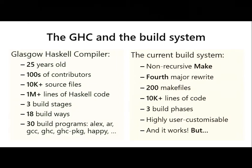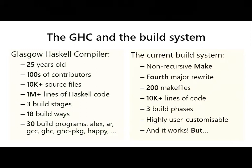Not surprisingly, the current build system is complex. It uses non-recursive make — a fourth major rewrite, almost from scratch, with four different implementations developed continuously. There's a lot of engineering effort that went into this. It's fairly big: 200 makefiles spread across 10,000 lines. It's organized into three build phases, not to be confused with stages, which are used to deal with dynamic dependencies that make doesn't really support very well. It's highly user-customizable because GHC developers use it in multiple different ways and scenarios.